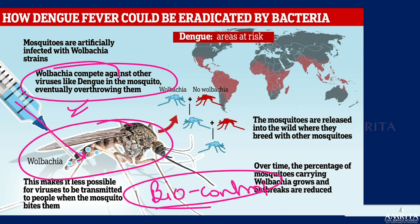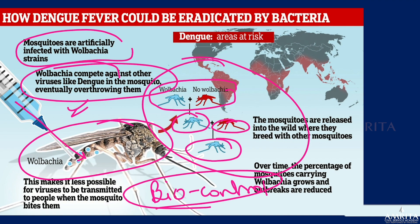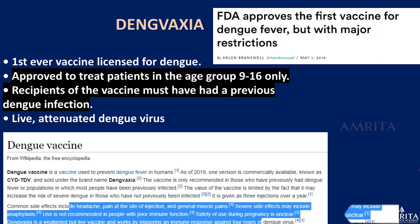When Wolbachia-infected mosquitoes mate with non-Wolbachia mosquitoes, they produce Wolbachia-containing offspring, which over time reduces the mosquito population carrying the dengue virus. Mosquitoes are artificially infected with the Wolbachia strain — this biocontrol method is being tested in Australia to handle dengue.